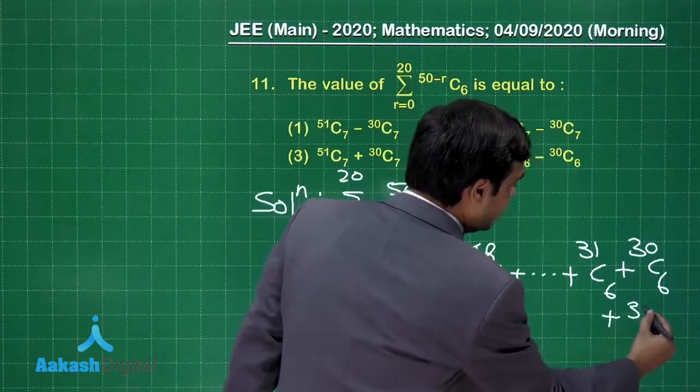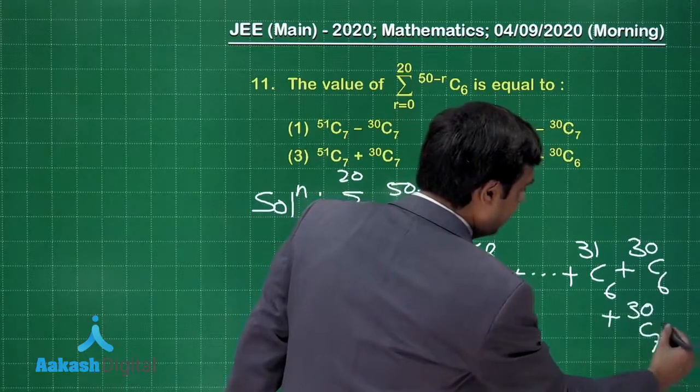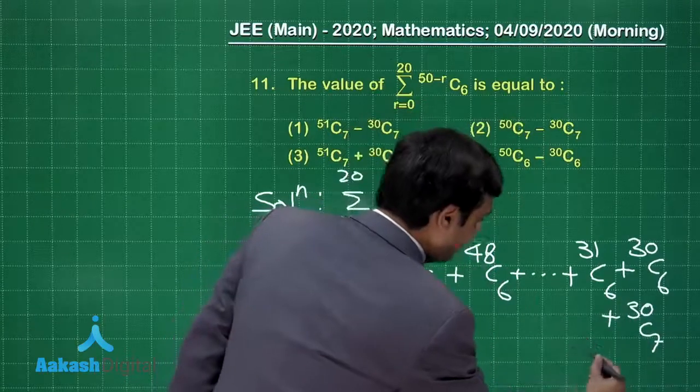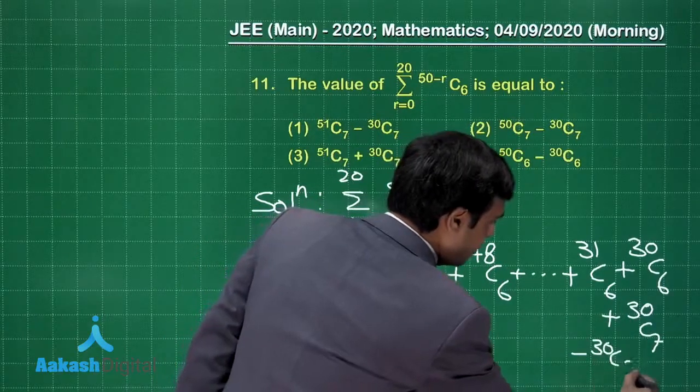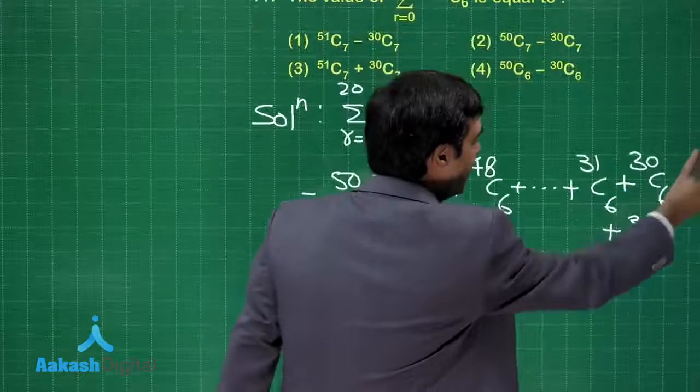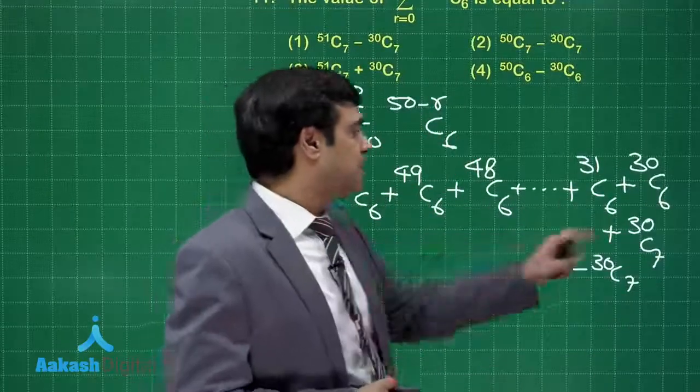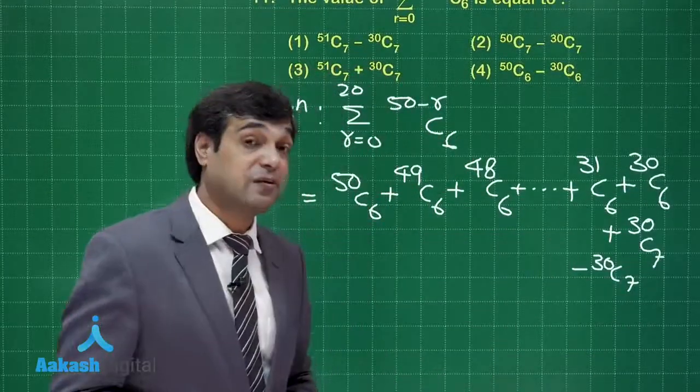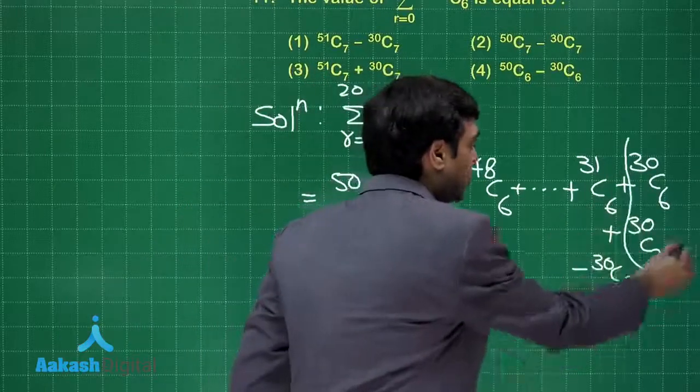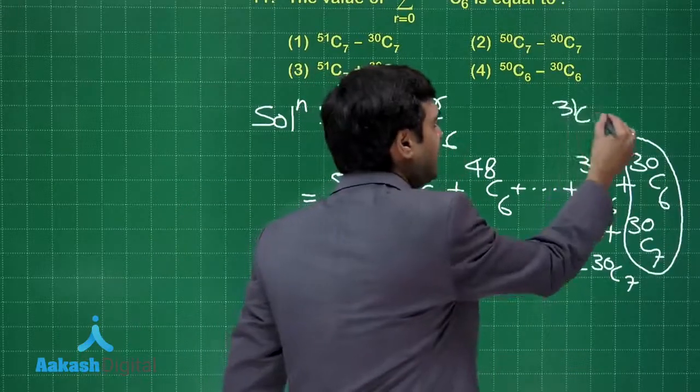Now here you can see if you add and subtract, say for example, 30 C 7. What is going to happen? 30 C 6 plus 30 C 7 is 31 C 7.